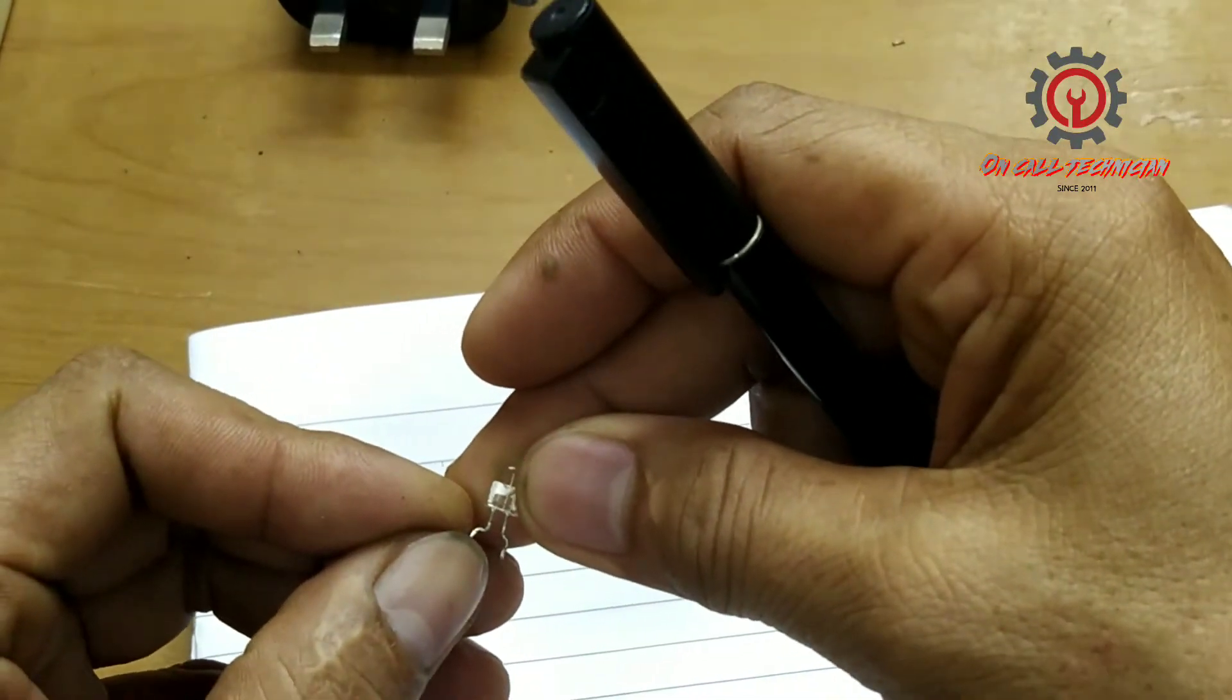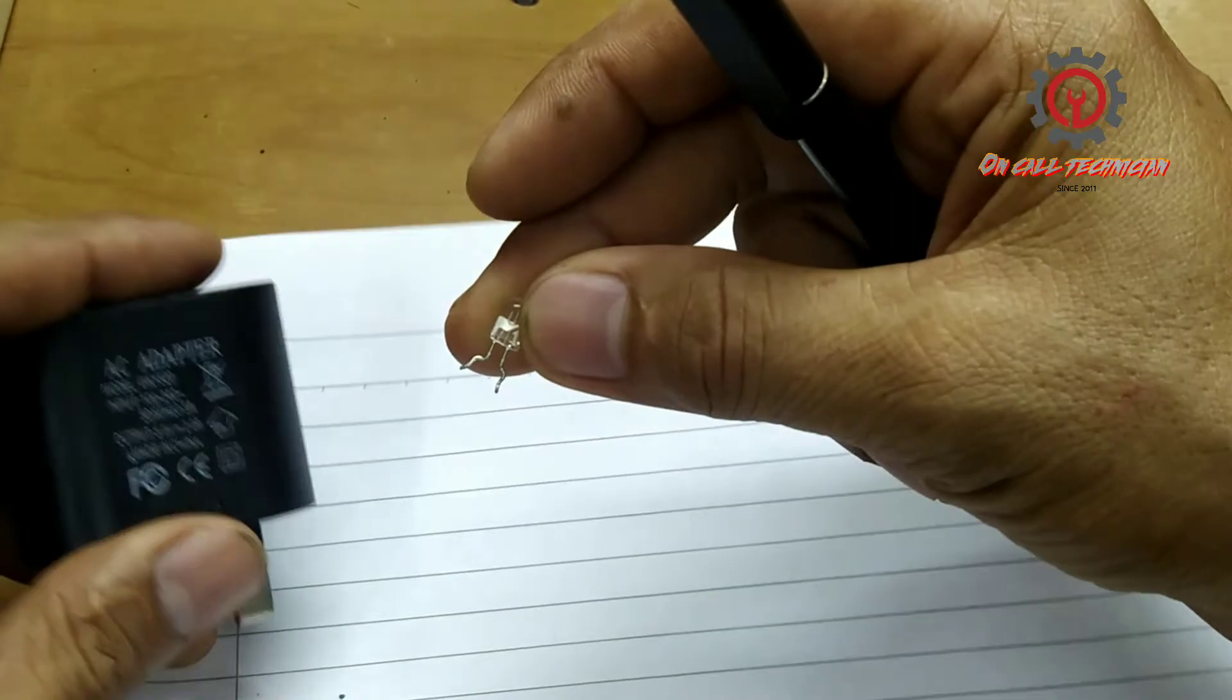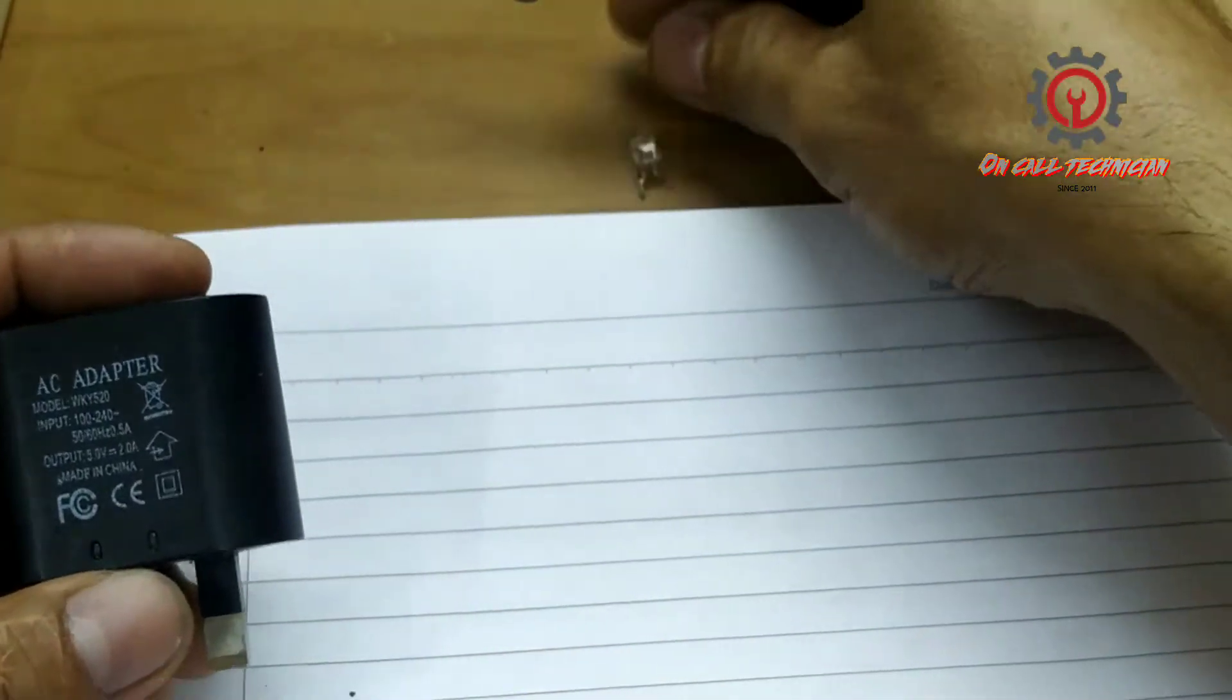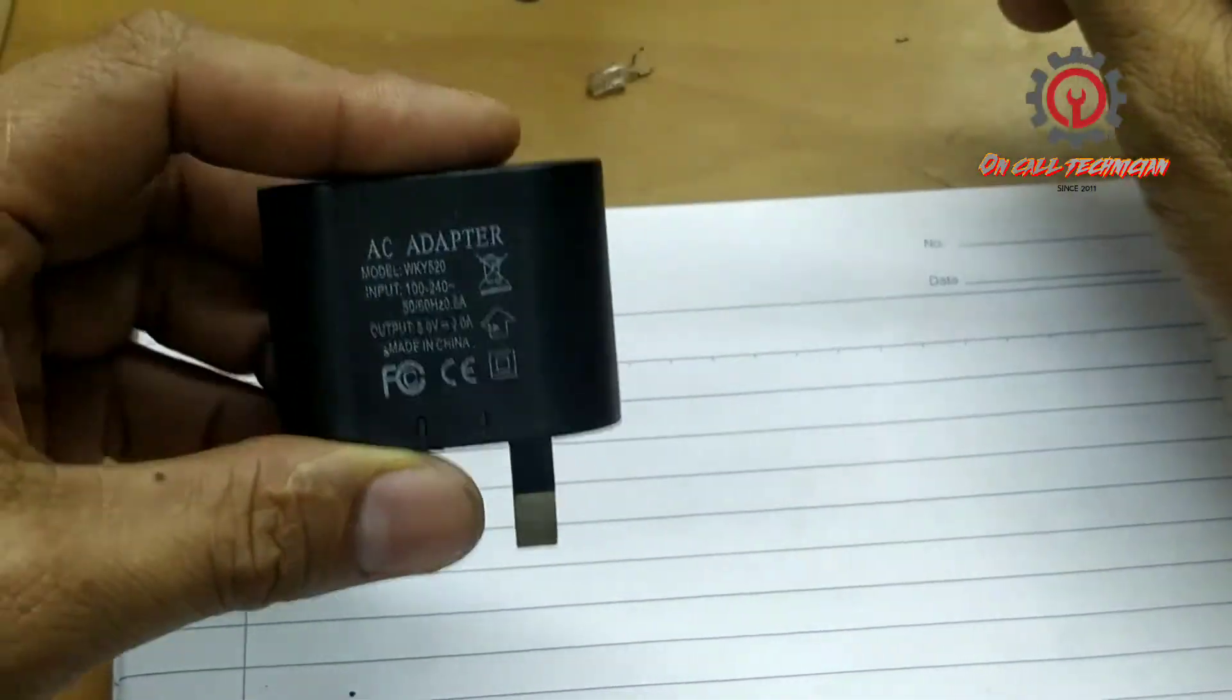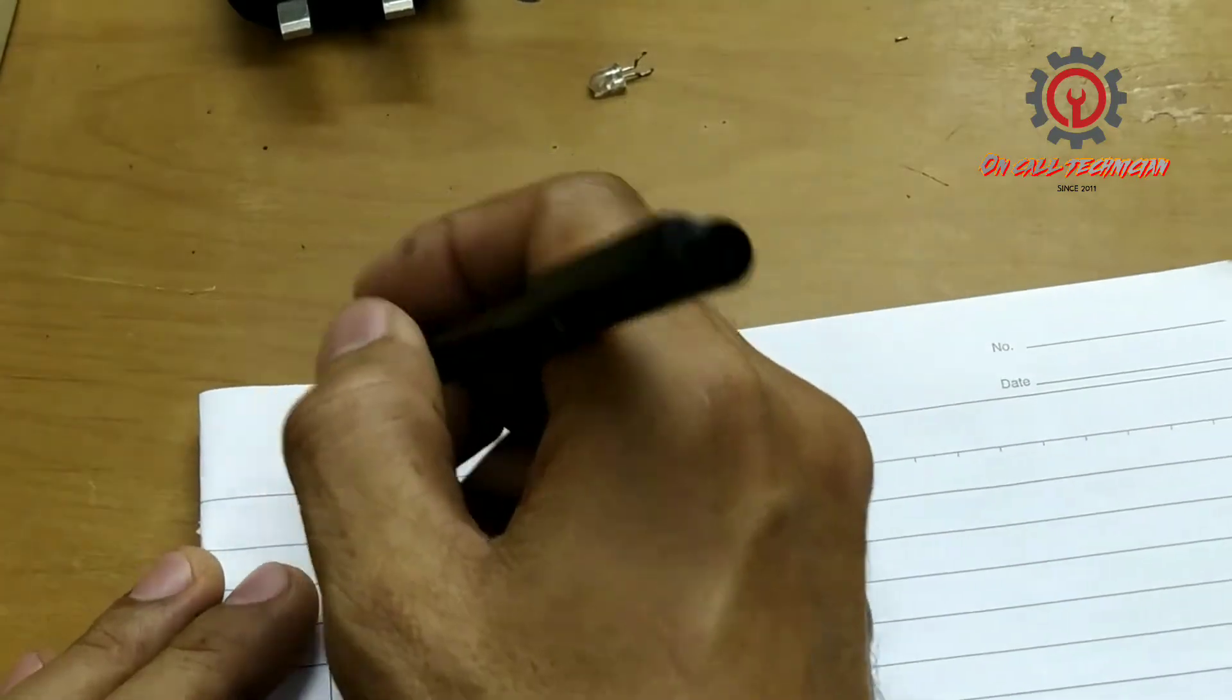Maligayang pagdating sa aking channel guys. Ngayon mag-measure tayo guys ng resistor para mapailaw natin 'tong 3.5 voltage na meron ampere na 25 milliamps gamit ang 5 volts na power supply.